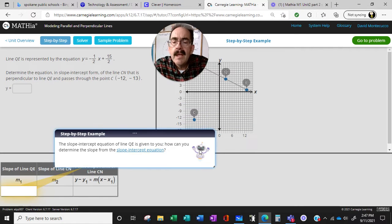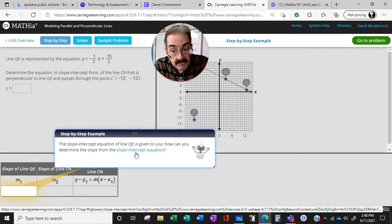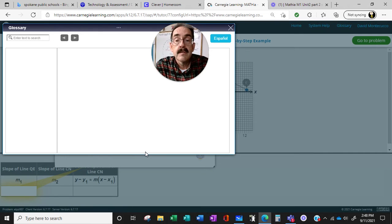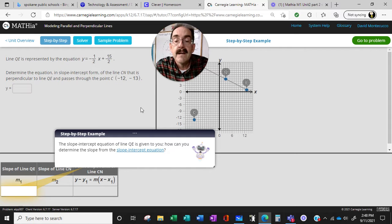Step by step. The slope intercept of Q is given to you. How can you determine the slope from the slope intercept form? The slope is always the M, it's always the number in front of the variable. And you can click and it'll take you to the slope intercept form, Y equals MX plus B. Y equals 3X plus 4 is written in slope intercept form. The slope of the line is 3.